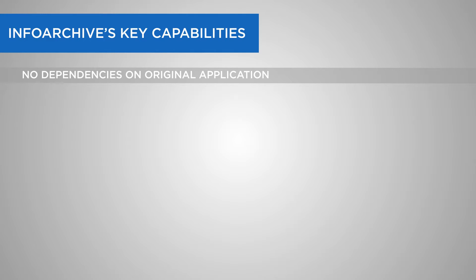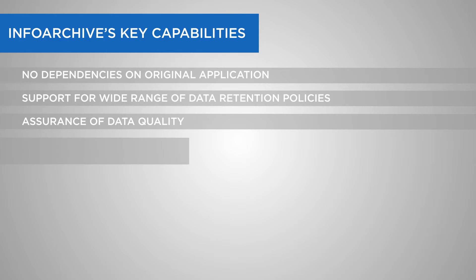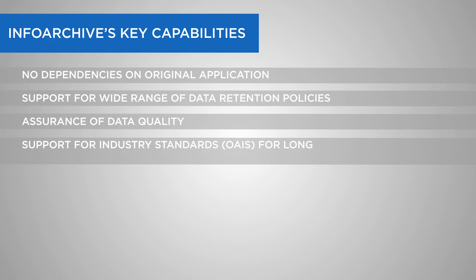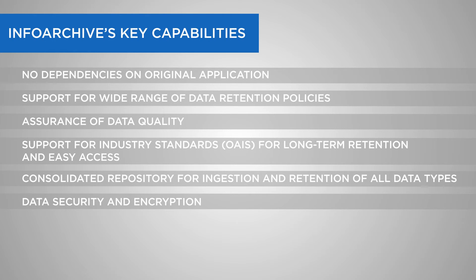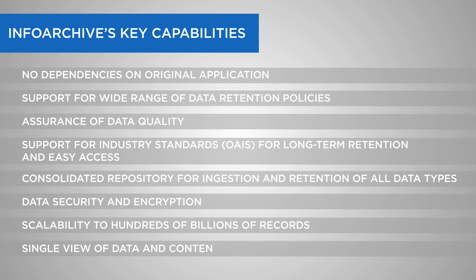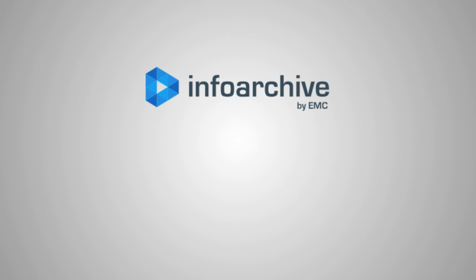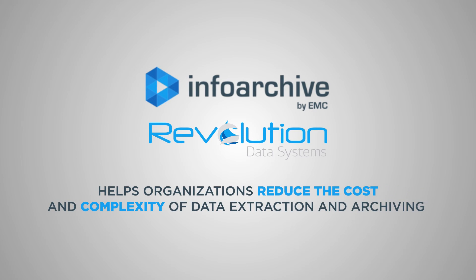Among Infoarchive's key capabilities are: no dependencies on the original application, support for a wide range of data retention policies, assurance of data quality, support for industry standards — OAIS for long-term retention and easy access — a consolidated repository for ingestion and retention of all data types, data security and encryption, scalability to hundreds of billions of records, and a single view of data and content. As a member of the Global Infoarchive consortium, Revolution Data Systems helps organizations reduce the cost and complexity of data extraction and archiving while ensuring compliance and enabling smart, non-disruptive application decommissioning.